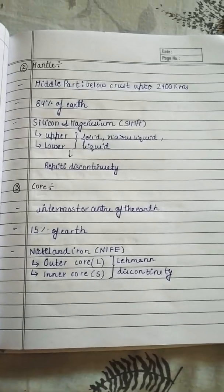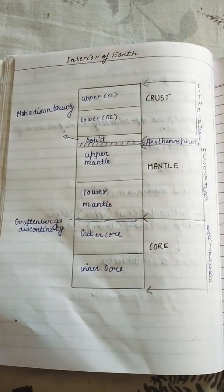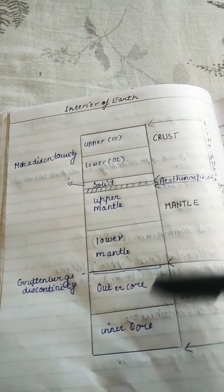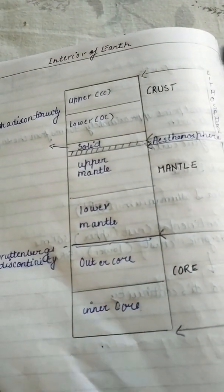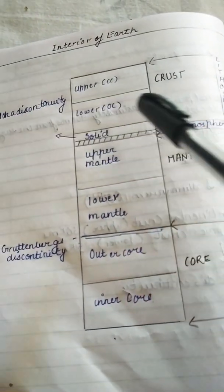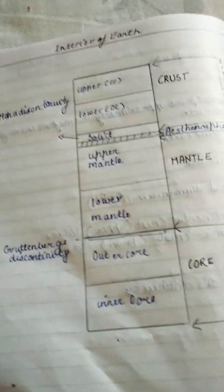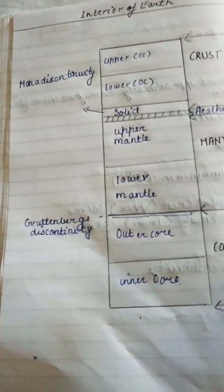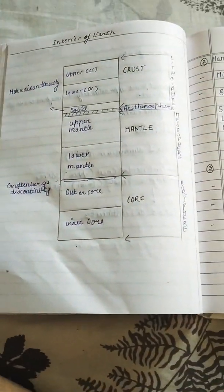Explanation with a square diagram. So as you can see the diagram, this is the crust. This is the upper crust, sorry, continental crust. Oceanic crust. Upper mantle. Lower mantle. Outer core. Inner core. Please draw this diagram. It's very, very important.